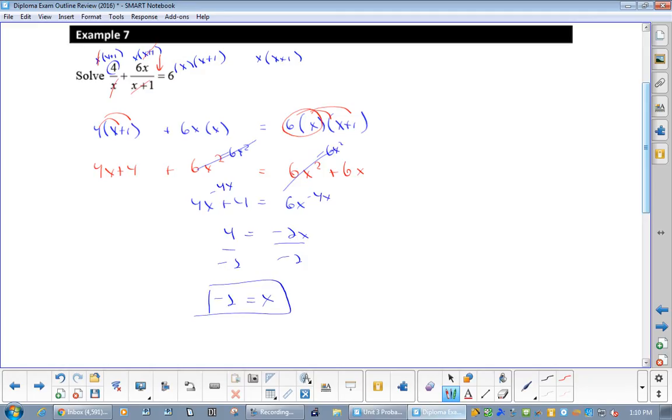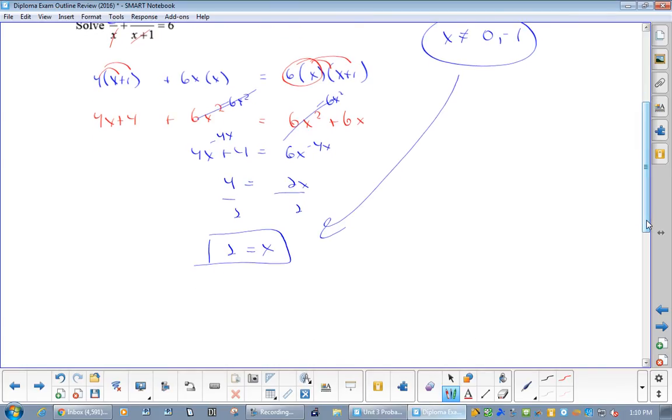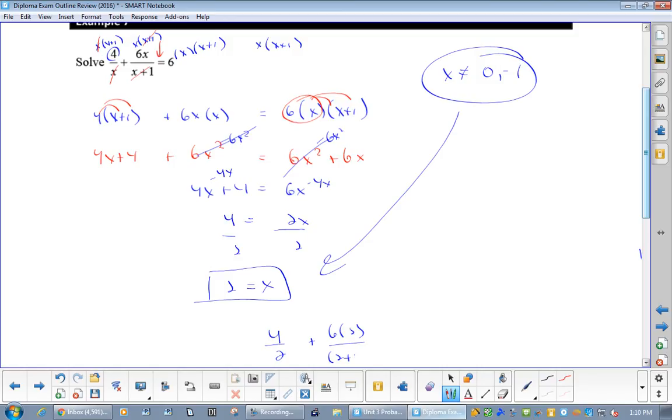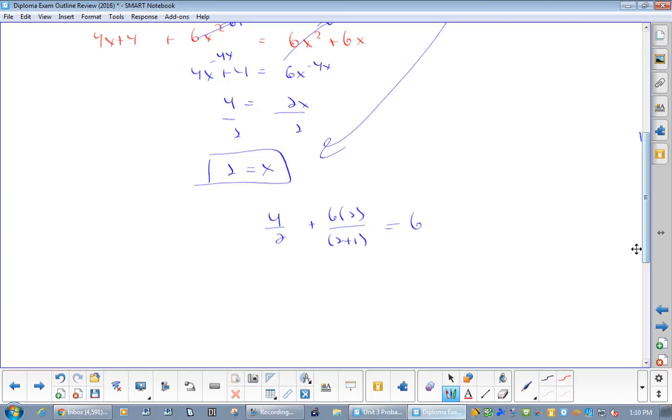Now, be careful. What are my non-permissibles? x's cannot equal 0 or negative 1. Be careful because if this was that, there would be no solution. Okay. And let's just check, 4 over 2 plus, I'm just putting my 2 in to see if it works. 6 times 2 over 2 plus 1. This is supposed to equal 6. Well, this is 4 over 2 is 2. Plus 12 over 3 is 4.